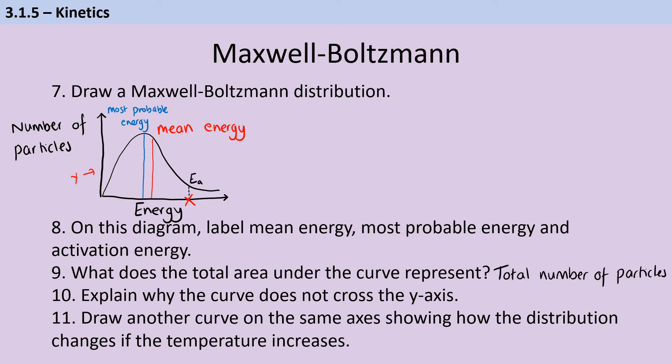The total area under the curve represents the total number of particles. And that's important if you're going to put more than one curve on the same axis. So, for instance, if we were going to double the concentration of a particular volume, then we would be doubling the number of particles. And therefore, the area under the curve would also double. But if we were changing the temperature of a particular reaction and not affecting the concentrations or the volumes, then although the graph would move and would be skewed in a different direction, the overall area would be the same.